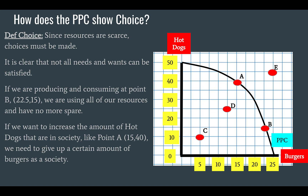Given a fixed amount of factors of production and a fixed state of technology, and we're using all of our factors of production as efficiently as possible, we are on the PPC curve and we cannot produce any more of both goods. So what's the opportunity cost? If we want more of one good — let's say point A, which gives us 40 hot dogs while point B only gives us 15 — if we want more hot dogs, we have to give up a certain amount of burgers. We're going from 22 and a half burgers to 15, so that's seven and a half burgers we would have to give up in order to get the extra 25 hot dogs.